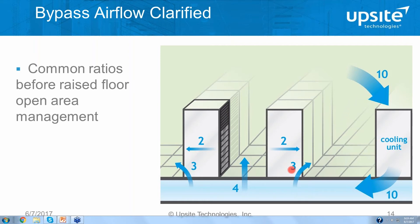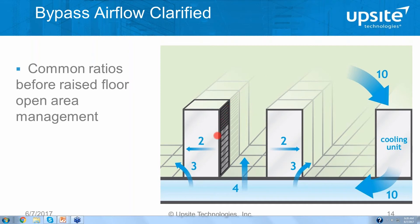We have four units of air coming into a cold aisle and supplying the IT equipment in that row. This row consumes two units of air, and this row's IT equipment consumes two units — so the IT demand is four units of air. We're supplying four, and if all the airflow management is done well in this aisle, that may be sufficient — just enough to meet the demand of the IT equipment.